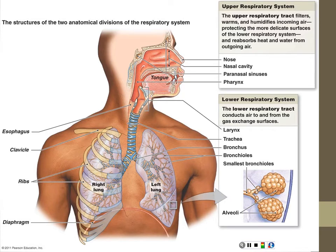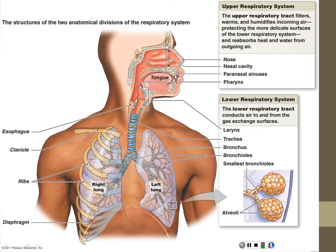Like so many things, we start out talking about an organ system by dividing it into pieces, because the different parts always do different things. For the respiratory tract, we divide it into upper and lower respiratory system — this is the most common division clinically. The upper respiratory system is anything above the larynx, and anything below the larynx is lower respiratory. Where the boundary line is varies depending on who you ask.